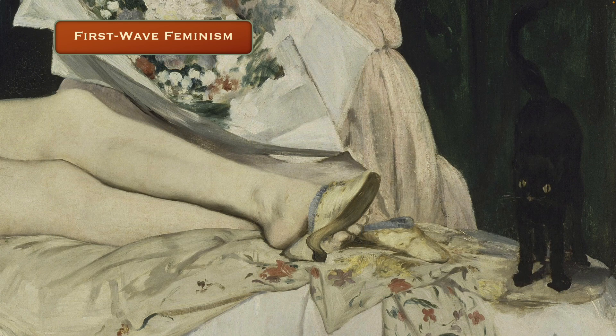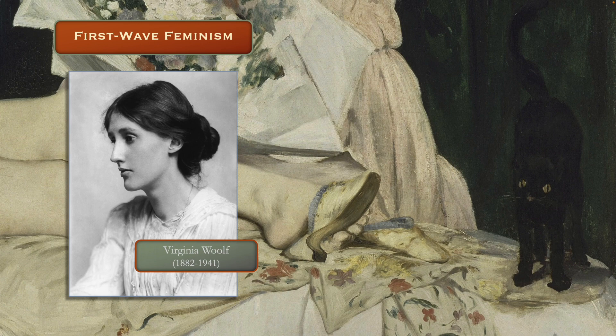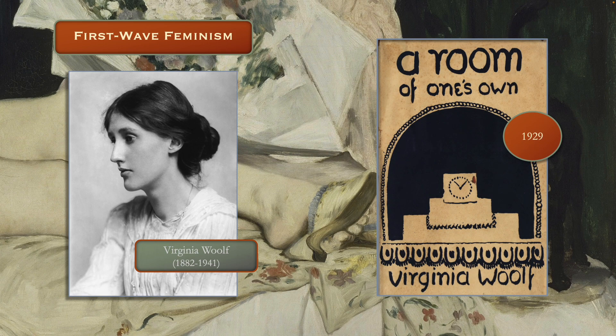We're going to skip ahead quite a bit to the 20th century — Virginia Woolf, who was born in 1882. Her father, Leslie Stephen, was a very prominent public intellectual and literary critic who did not hold progressive views on female education, and was basically a spokesman for Victorian patriarchy. In 1929, she published A Room of One's Own, which focused specifically on the problem of female authorship and the material conditions that kept women from being as artistically or creatively successful as men.